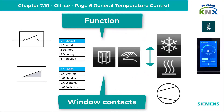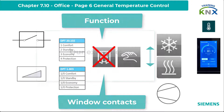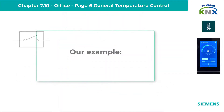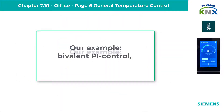Window contacts are also not taken into account at the moment. If you want to integrate them, this must be done externally by activating the building protection mode when the windows are open. From the many options, I pick out here the bivalent proportional PI control.